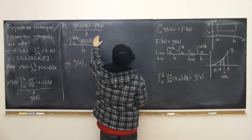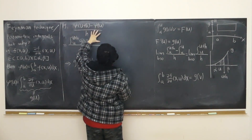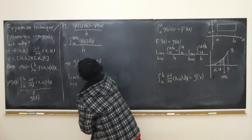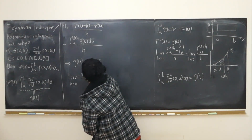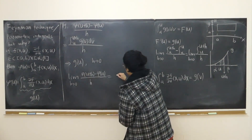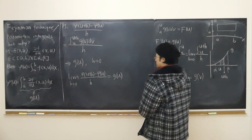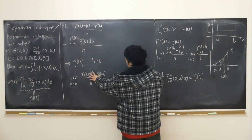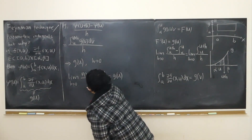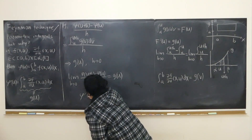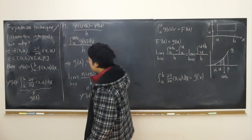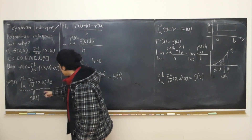Alternatively, we can rewrite the whole expression: the limit as h approaches zero of [φ(u+h) − φ(u)] / h equals g(u). This is exactly the definition of the derivative of φ(u) at the point u, so this is φ'(u) = g(u). I've proven that φ'(u) really equals g(u).